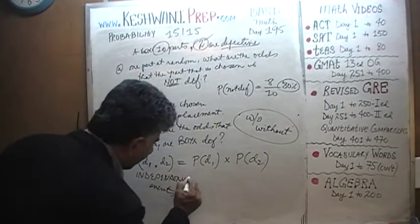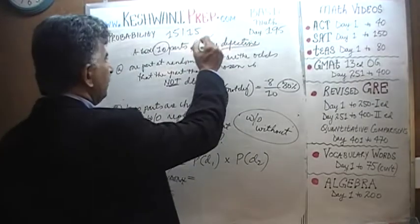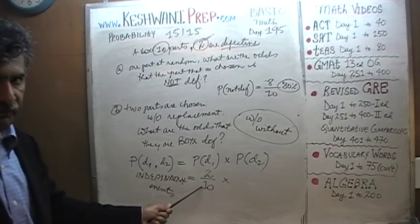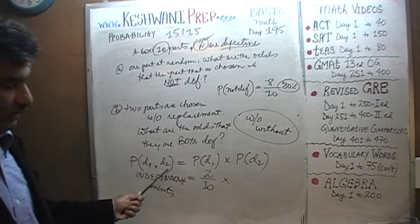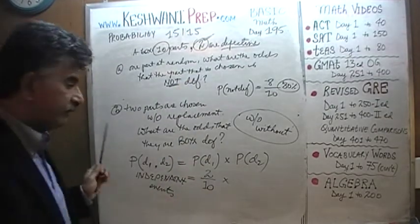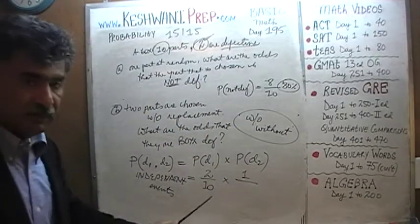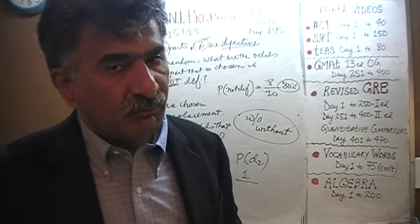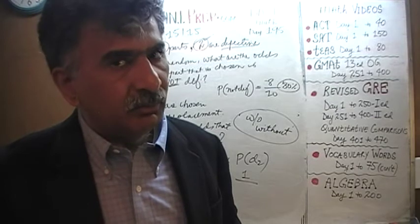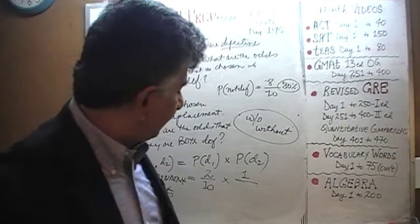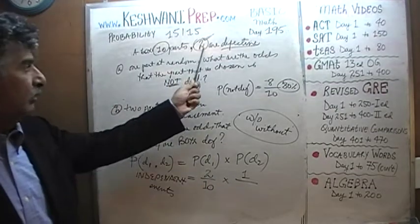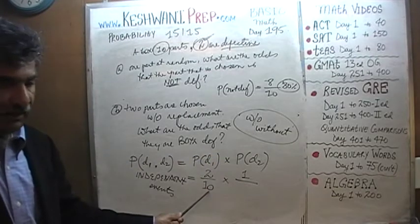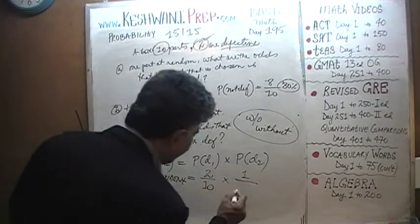In the first try, we have 2 defective parts out of 10. Once we have chosen a defective part in the first try, there is only one defective part left — because we only had two to begin with. This is very similar to the earlier problem, where once you chose one of the 45 people with a sibling in the other class, there was only one person left in the second group who qualified. The same logic applies here. And how many total parts remain? Nine, because we did not put the first part back.